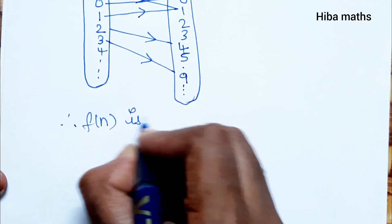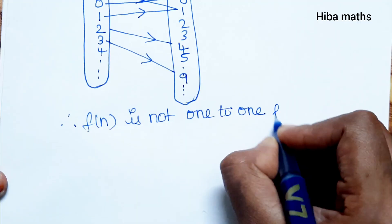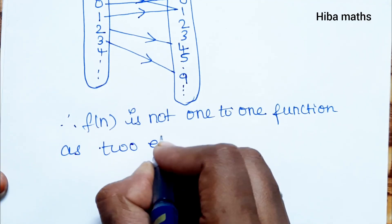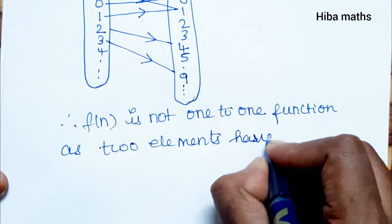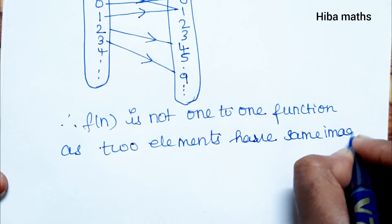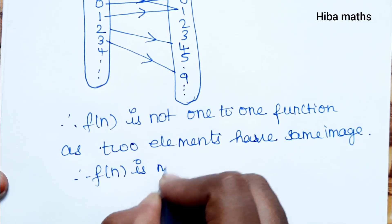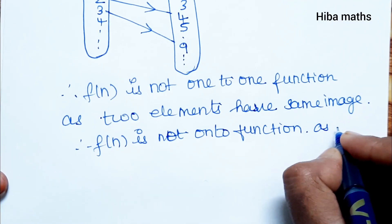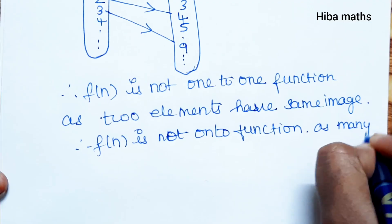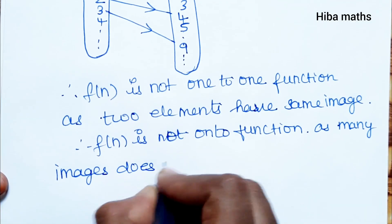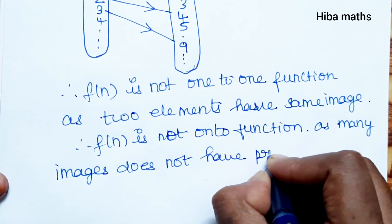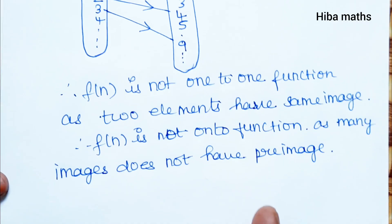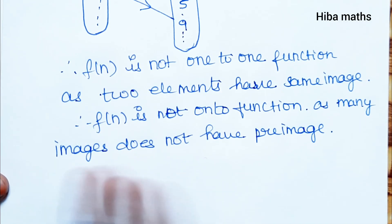Therefore, f is not a one-to-one function, as two elements have the same image. Also, f(n) is not an onto function, as many images do not have a preimage. These statements are very important. So the conclusion: f(n) is not one-to-one as two elements have the same image, and f(n) is not onto as many images do not have their preimage.